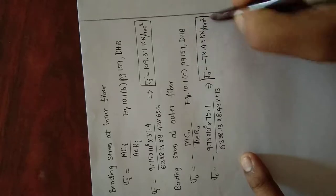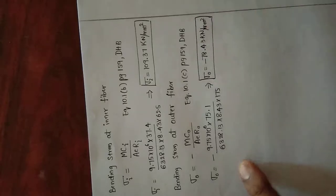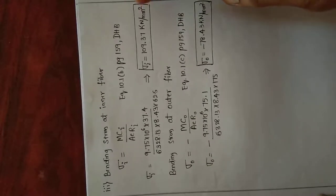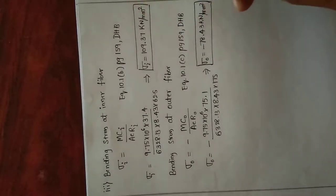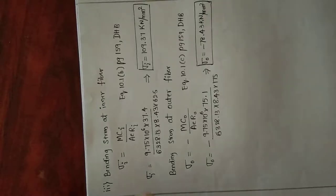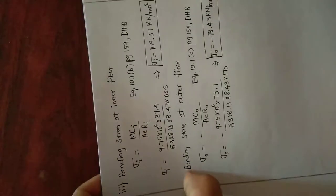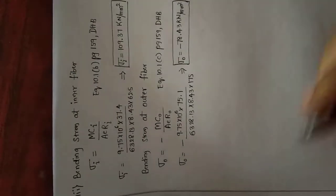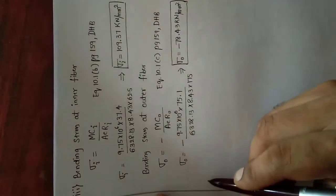We were asked to find the stresses in the crane hook. We have found direct stresses and bending stresses. Now we have to find the resultant stresses, which are nothing but combined stresses. Combined direct and bending stresses give us resultant stresses. This is the last step, step number 5: resultant stresses.